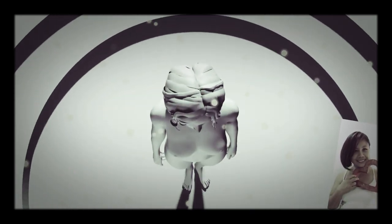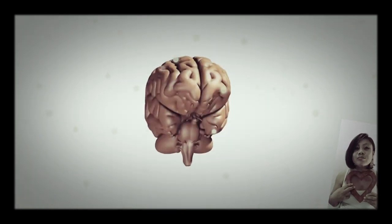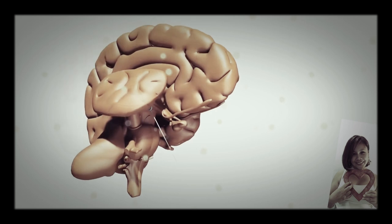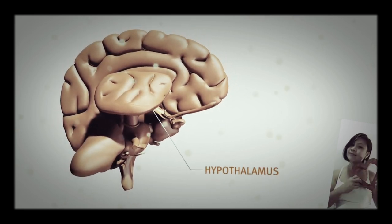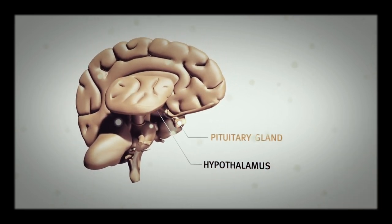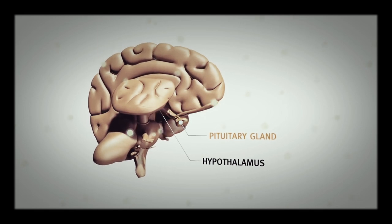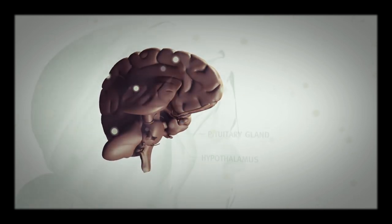The natural processes in the ovary and womb are controlled by hormones in the brain, which control estrogen and progesterone production in the ovaries.